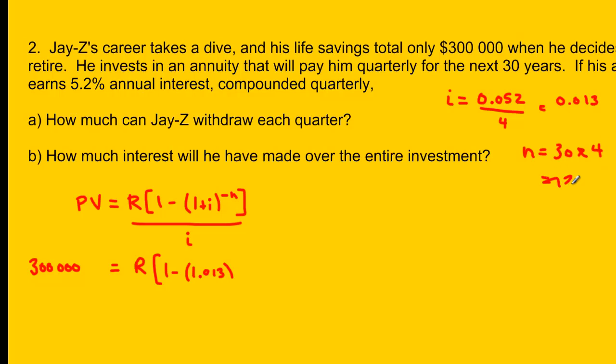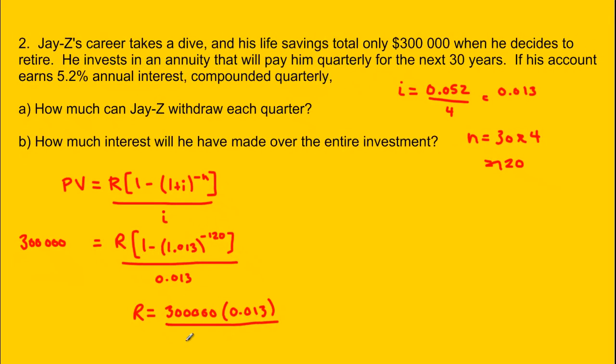So my n here is negative 120. And then we'll take this and divide it by i, which is 0.013. So how do we solve for R now? Well, we try to take everything away from R and move it to the other side. So as you can see, I'm going to take this 0.013, which is currently dividing the R, and I'm going to multiply it to the other side. And then I'm going to take this 1 minus 1.013 to the exponent negative 120, and because it's now multiplying with the R, I'm going to divide it on the other side. So we're going to end up with something that looks like this: R is going to equal this 300,000 multiplied by this 0.013, but then divided by this 1 minus 1.013 to the exponent negative 120.